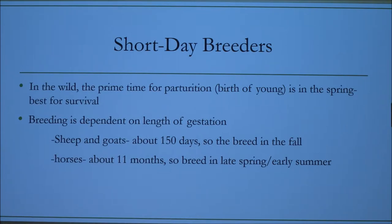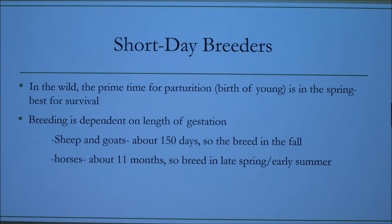The whole reason behind the difference between short-day breeders and long-day breeders: in the wild, the best potential for survival of young is if the animal is born in the spring. So their breeding is dependent on the length of their gestation. Sheep and goats are about 150 days, which is about five months, so they need to be bred in the fall in order to have their young born in the spring. Horses are about 11 months, so they need to breed in the late spring or early summer.